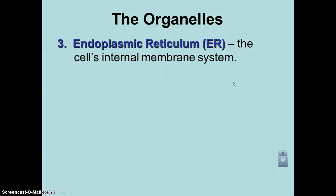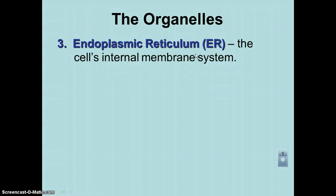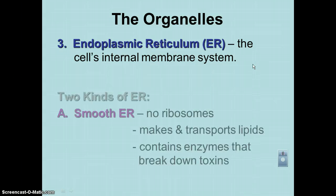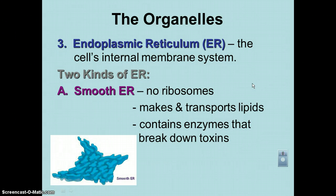Our next organelle is the endoplasmic reticulum. The endoplasmic reticulum is way too many letters to spell, so most of the time we shorten this as just the ER. This is the cell's internal membrane system. Basically, think of like hallways in your school — hallways are used to move people and materials from one place to another, and that is exactly what the ER does in a cell. It moves materials from one part of the cell to another.